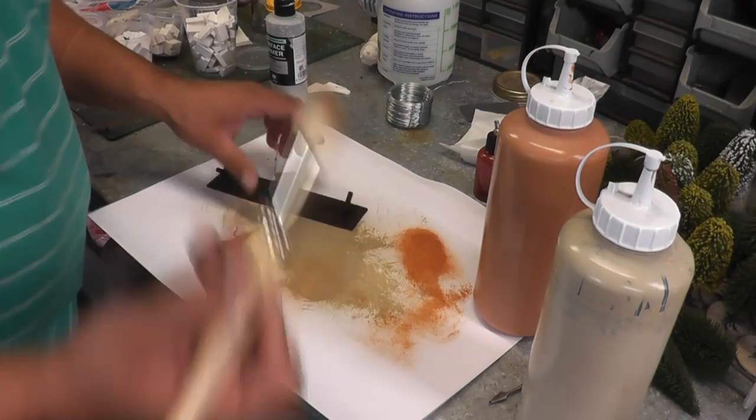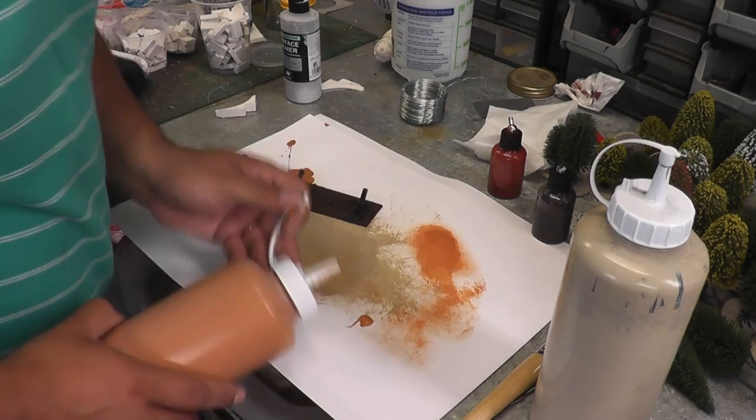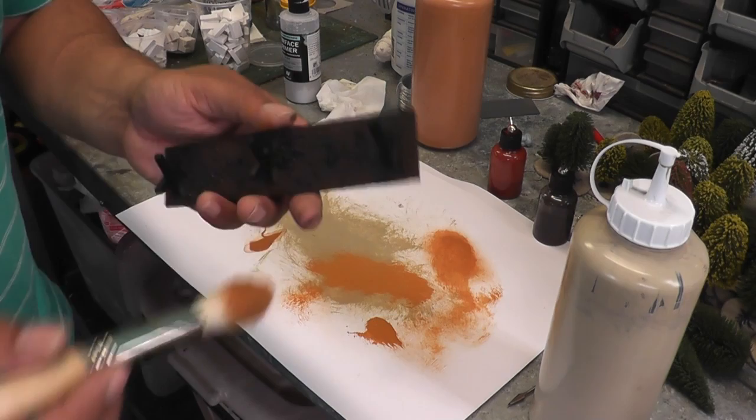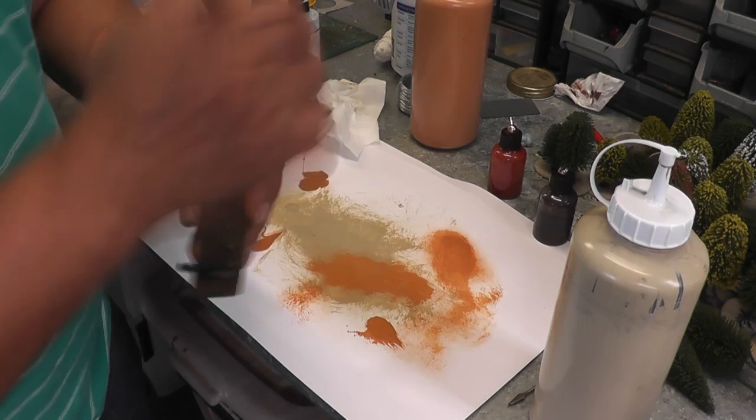Two layers of dry brushing. Big dry brush. We use this orange color first, just a little bit of this. You could just do one highlight if you wanted to but I'm going to do two of them. All we're doing is just a dry brush, nice and simple.